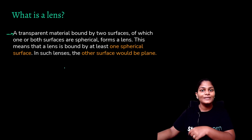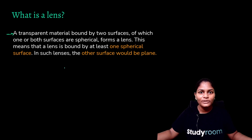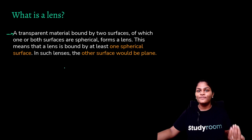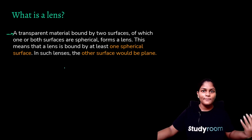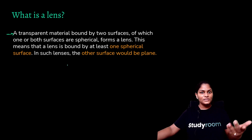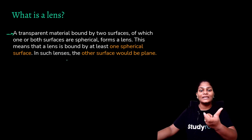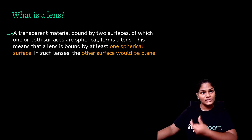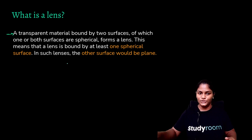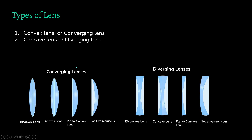Unlike a mirror, where light bounces back because it is a reflective surface, in the case of a lens light passes through. Now we are going to look at some lenses, so the definition about one or both spherical surfaces will become clearer. We have two types of lenses: the first is a convex lens or converging lens, and the second is a concave lens or diverging lens.